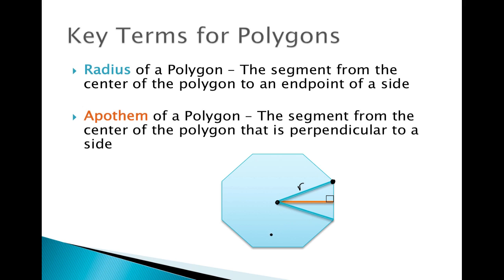Now we're going to learn a new term called the apothem. The apothem of a polygon is the length of a segment from the center of the polygon that is perpendicular to a side. It's actually kind of considered to be like the height of a polygon — a polygon doesn't really have a height, but it's kind of like that. It's always perpendicular to the side of a polygon. That's called your apothem, and we're going to use it when we learn about the area of polygons.